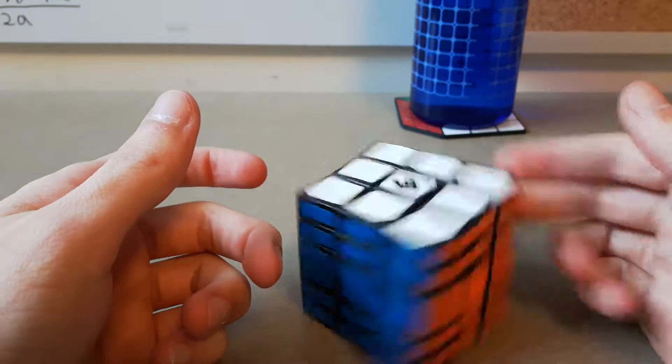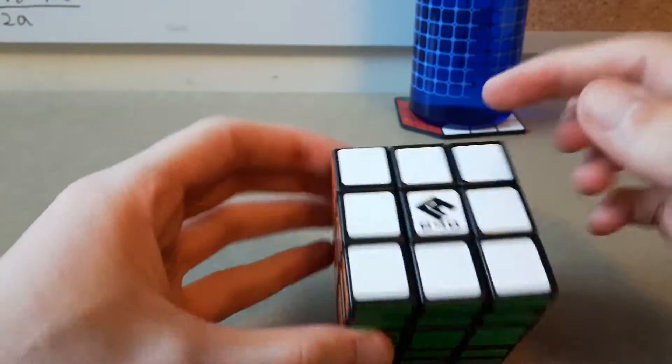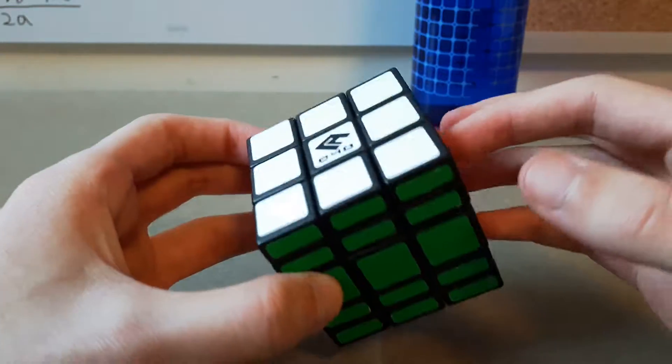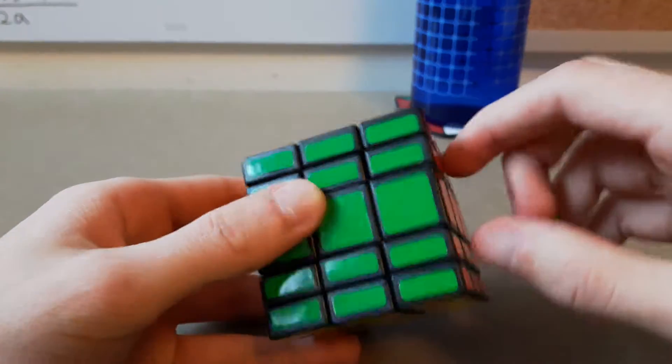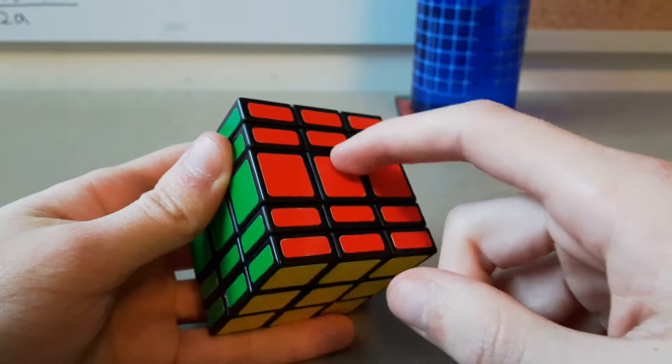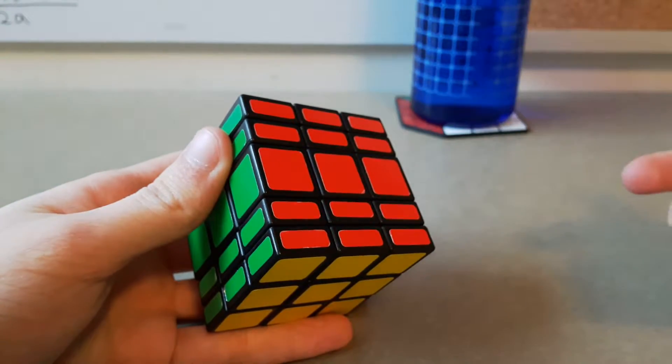This puzzle does get a parity, which is just these pieces can, the centers on the middle layers, they can be interchangeable because they're two red centers. So, if you have those in the wrong place, it will create a parity.